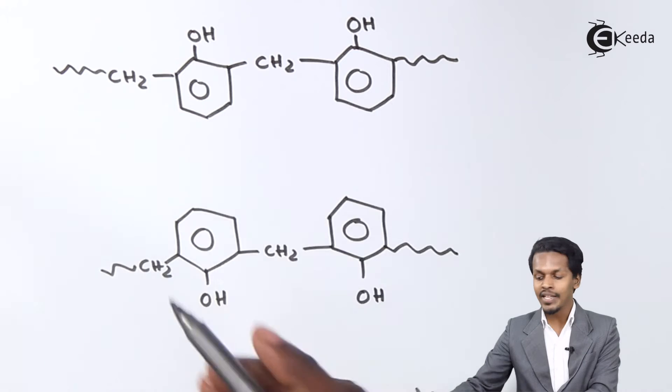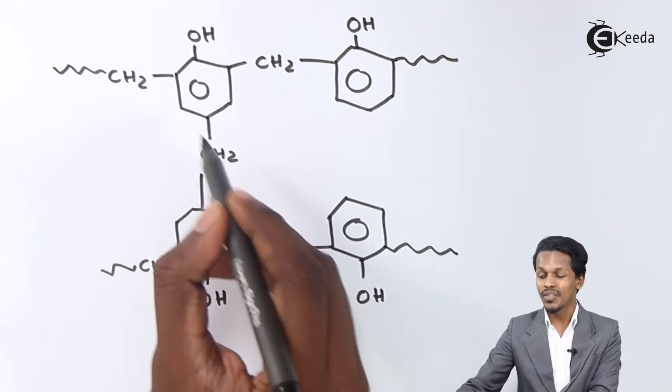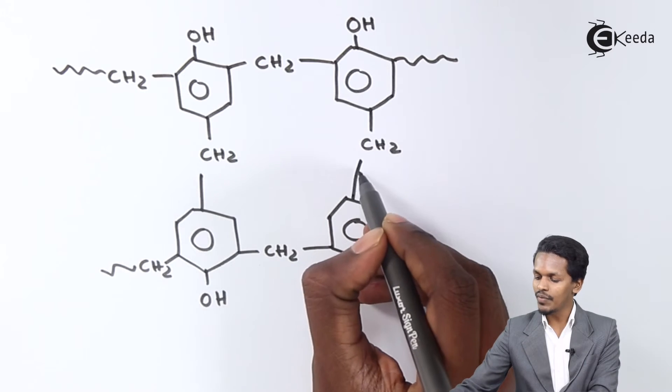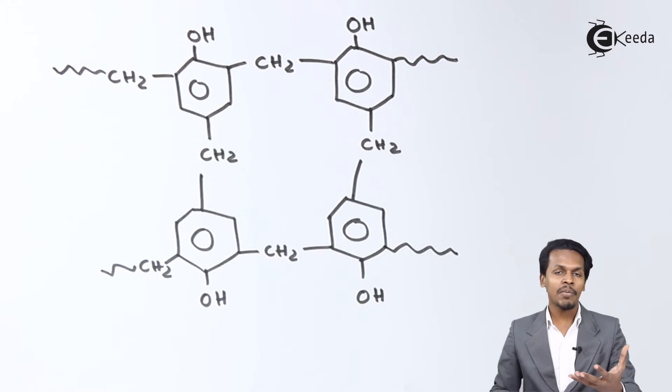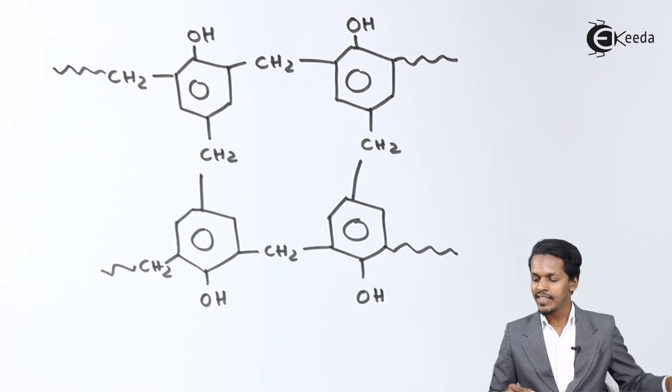These two linear chains are combined with CH2 because of the formaldehyde we introduced. The structure we get is a three-dimensional structure, and this is Bakelite. During this process, water molecules are also eliminated.